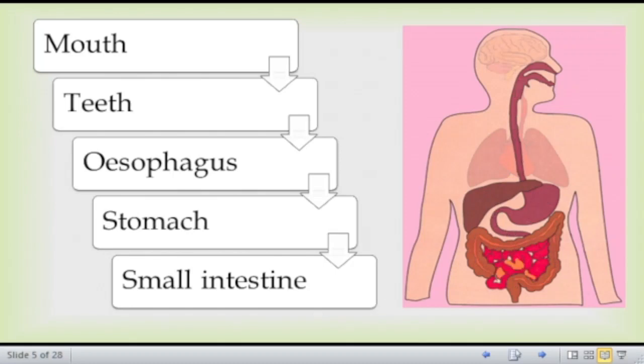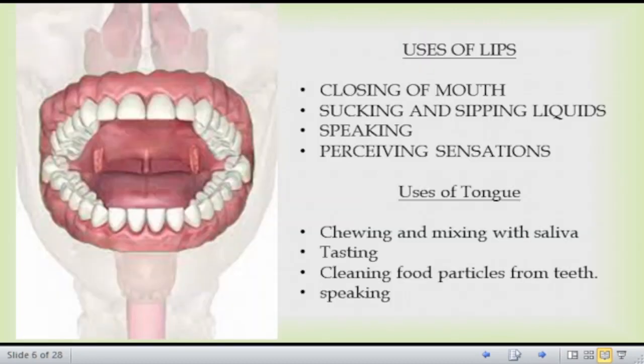The first thing in the mouth is the lips. It is a sensory structure — lips help us to sense things in the mouth, aid in sipping liquids, and in the closing of the mouth.